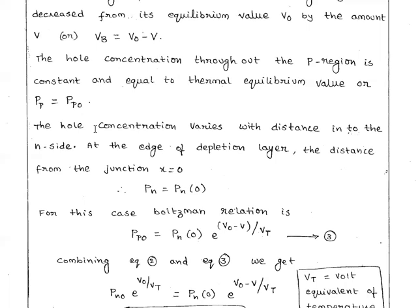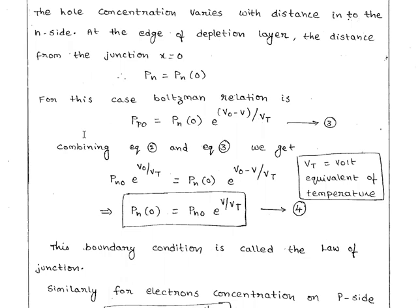The hole concentration varies with distance into the n-side. At the edge of the depletion layer, where the distance from the junction is 0, the hole concentration at the n-region equals pn(0). Applying Boltzmann's relation for this case: pp0 equals pn(0) into e power (V0 minus V) / Vt.